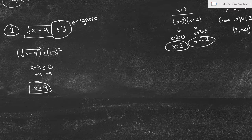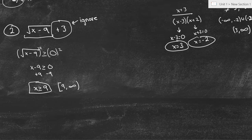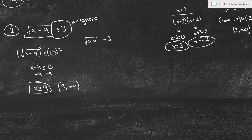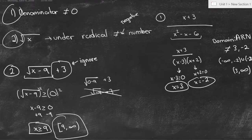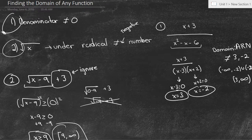In interval notation, we've got a bracket at 9, all the way to infinity. And let's think about it — if we had zero as an example point, we'd be left with the square root of zero minus 9, plus 3, which equals the square root of negative 9, plus 3. That does not work; we can't have a negative under a square root — we'd get imaginary numbers. So this is the domain of this function, using rule number 2.